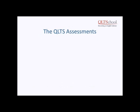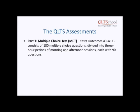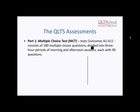The QLTS assessments are quite a complicated set of exams. It consists of three assessments. The first is the multiple choice test, which tests outcomes A1 through to A11 and consists of 180 multiple choice questions divided into two three-hour periods of morning and afternoon sessions. Outcomes A1 to A11 are proficiencies in areas of law that the SRA expects of a newly qualified solicitor on their first day. Rigorous criteria are applied, so it's important you demonstrate your knowledge and application of the law thoroughly.